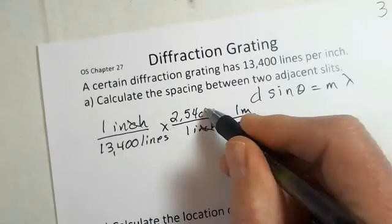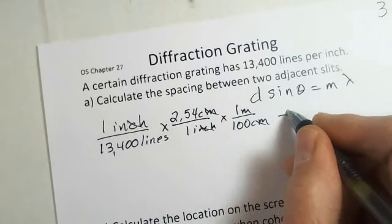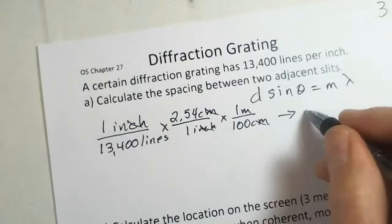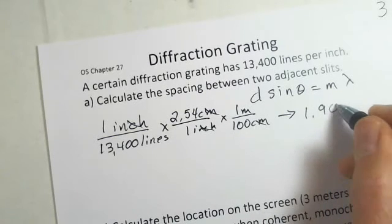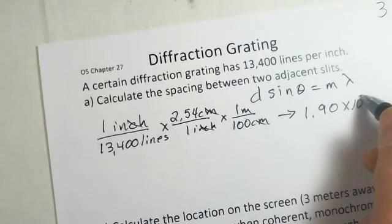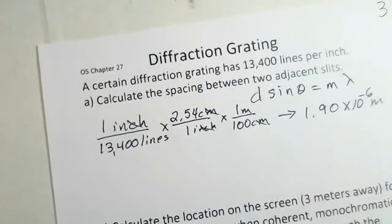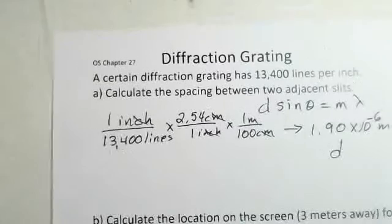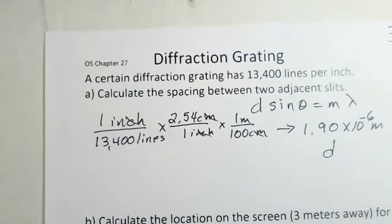So inches cancel, centimeters cancel, and you should do this calculation on your own calculator. Rounding off a little bit I have 1.90 times ten to the minus six meters. That's the distance between two adjacent slits on the device we call the diffraction grating.